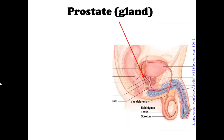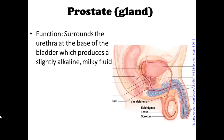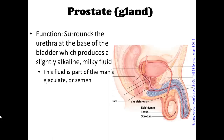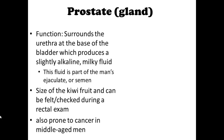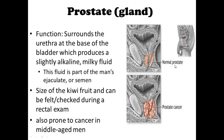Now we're going to talk about the prostate gland. Using the same image, this is the prostate gland — it surrounds the urethra at the base of the bladder. It produces an alkaline milky fluid that is part of the man's semen. It is about the size of a kiwi and can be checked during a rectal exam. The prostate gland is also prone to cancer in middle-aged men — here's a comparison of a normal versus a cancerous enlarged prostate.